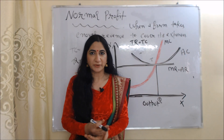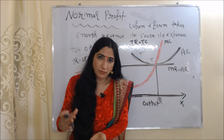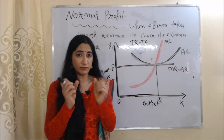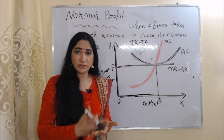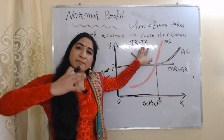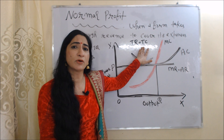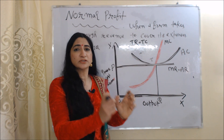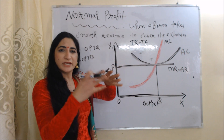Now we are going to talk about normal profit. In the case of normal profit, the firm earns just enough revenue to cover its expenses. Total cost equals total revenue. Normal profit is actually included as part of total cost — it covers factor costs such as wages, rent, and interest. So in the case of normal profit, total revenue equals total cost.